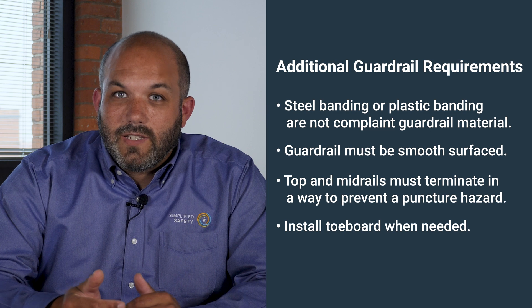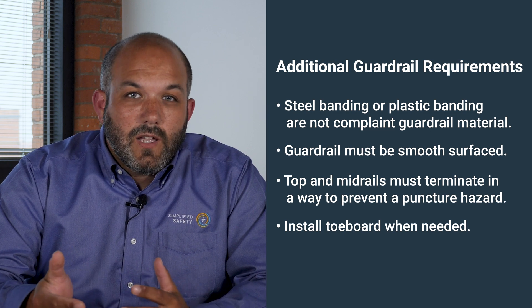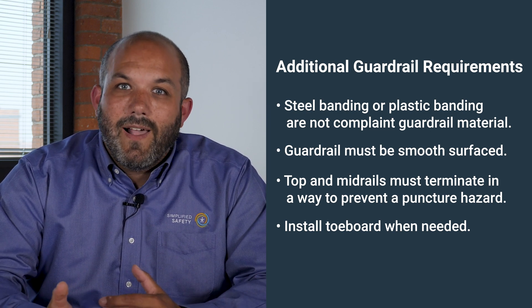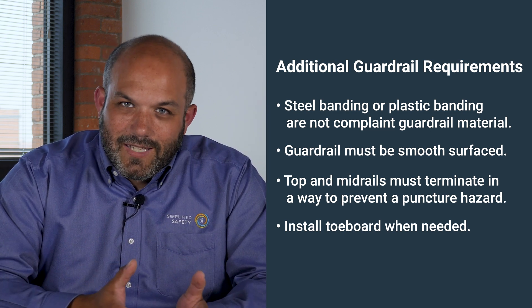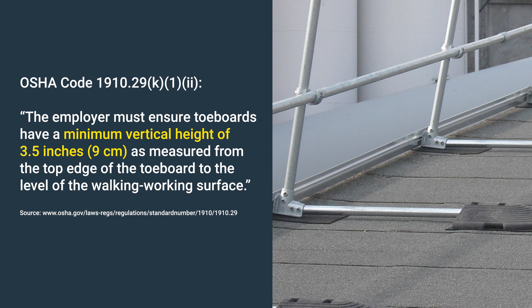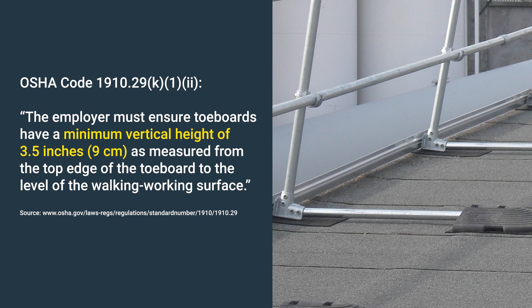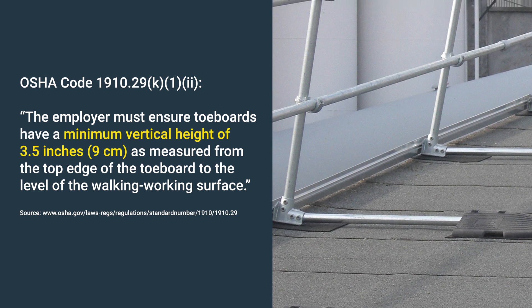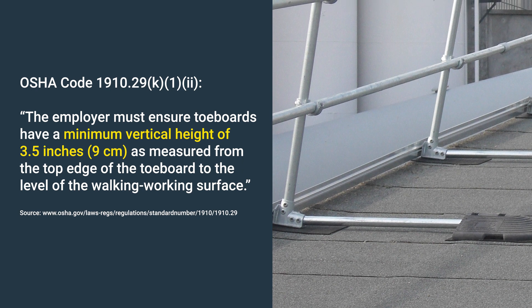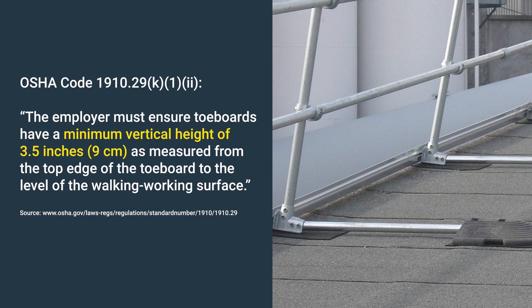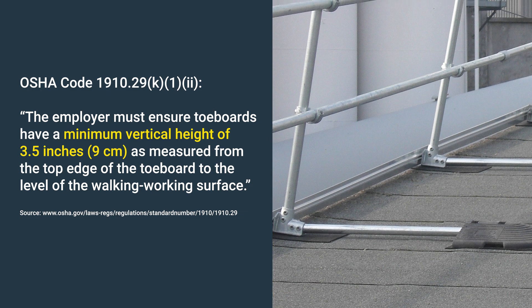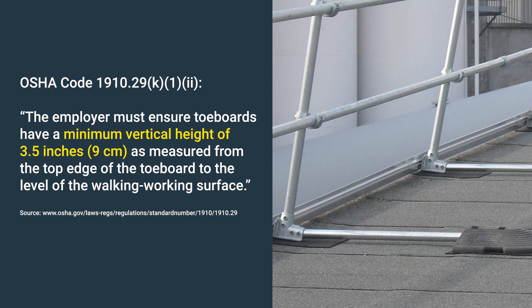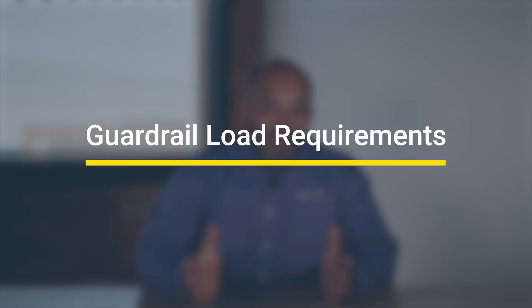If at any point tools, material, or debris can fall off the walking working surface onto a person below or into dangerous equipment below, then you need a toe board. The toe board needs to be a three-and-a-half inch tall barrier at the bottom of your guardrail, and there cannot be more than a quarter inch gap between the toe board and the walking working surface.